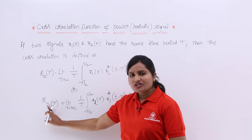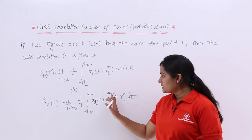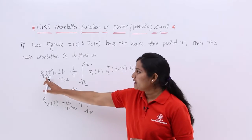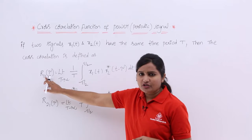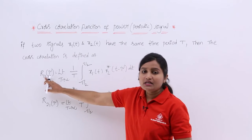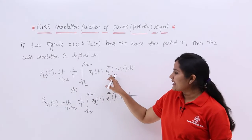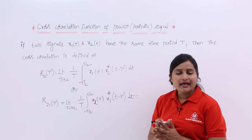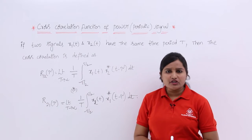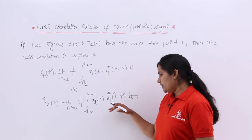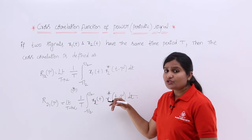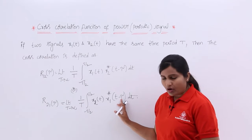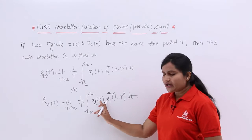When correlating the second function with the first function, you need to take the complex conjugate of the first function. Here the primary function is the second signal, so for the first function you apply the complex conjugate. You can also use a negative shift — t plus τ — and write the result as x2(t + τ) · x1*(t) dt.